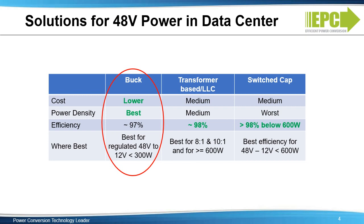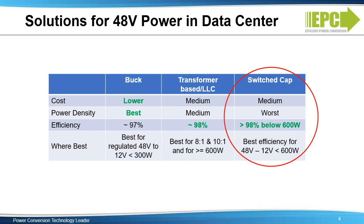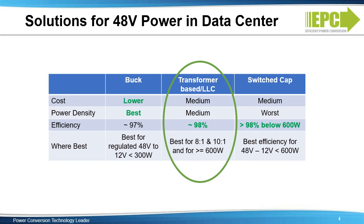However, for higher power, thermal handling and inductor size can be a challenge for the buck converter. The switch cap is inexpensive and very efficient at 48 to 12 volts when under 600 watts, but it is much more complicated than the simple buck or LLC. Also, the switch cap has limitations at high current and is not really a practical solution for systems greater than 600 watts. The LLC offers the best efficiencies for power levels greater than 600 watts for both 48 volts to 12 and 48 volts to 6 volts, and is the best topology for Vin-to-Vout ratios of 8-to-1 or 10-to-1.